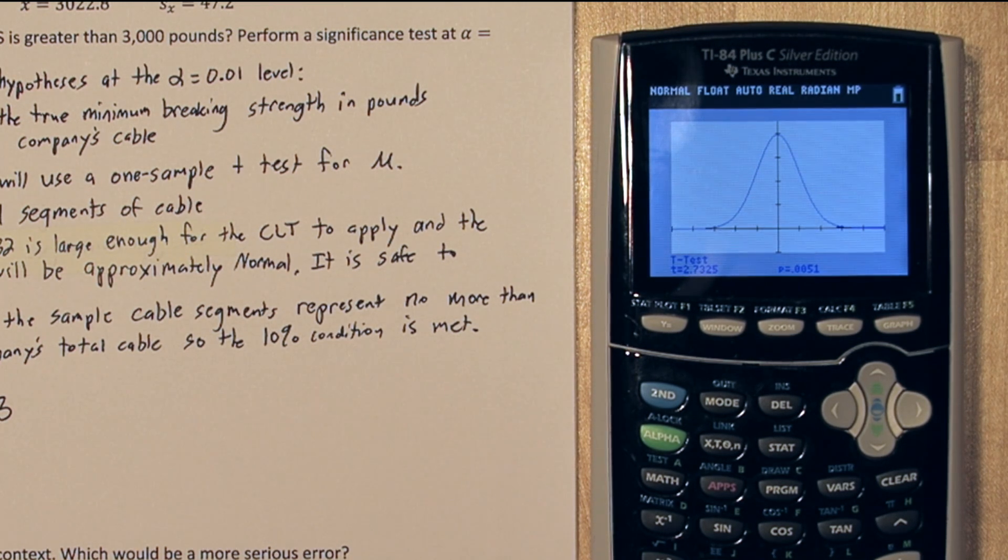What that means is if the true mean breaking strength is 3000 lbs, the probability of us getting a sample that had a mean this high is only .0051. So since this value is small, we're going to reject the null hypothesis.